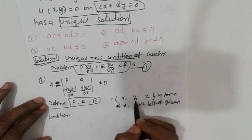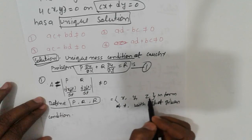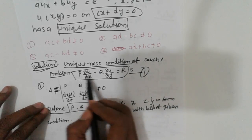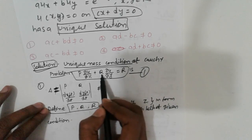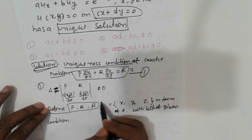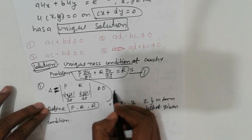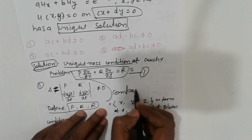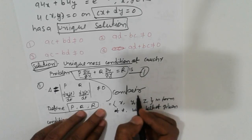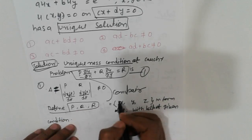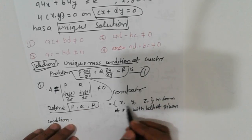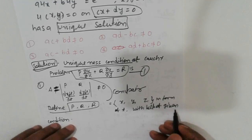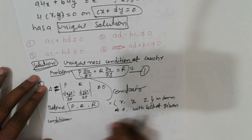Here p, q, r are functions of x, y, z. Compare the given differential equation to the standard form and find out the values of p, q, r. Then express x₀, y₀, z₀ in terms of the parameter t with the help of the given boundary conditions.